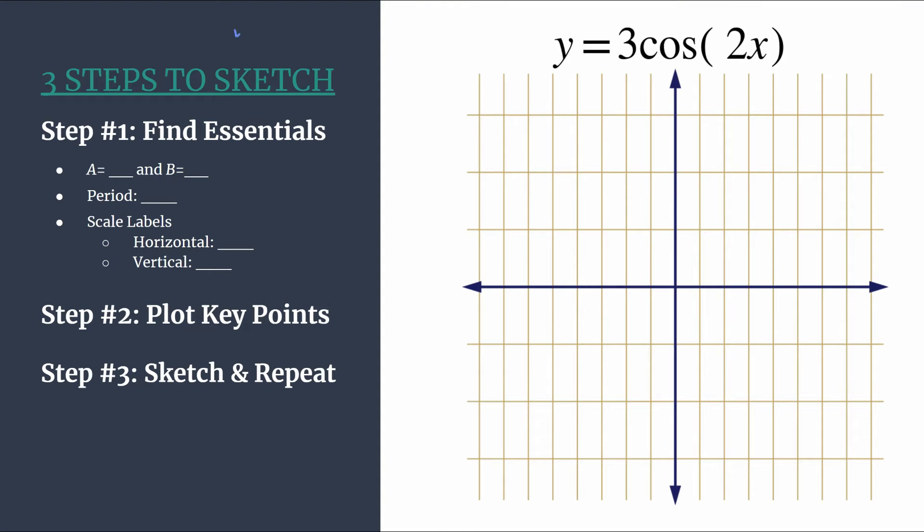So this method is for equations that are in the form a cosine bx. And knowing that helps us really jump into step one and we can identify our a and b. So in this case, a is going to be 3, the coefficient of cosine. a is going to be our amplitude.